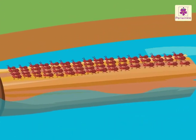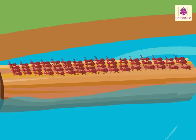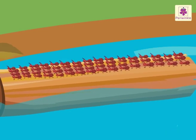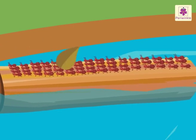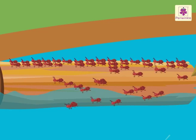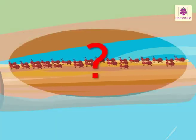There are 59 ants on a log of wood in a river. Thirty-one ants fell in the river. How many ants are left on the log of wood?